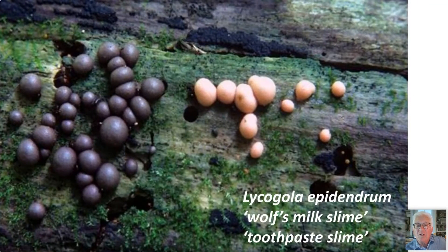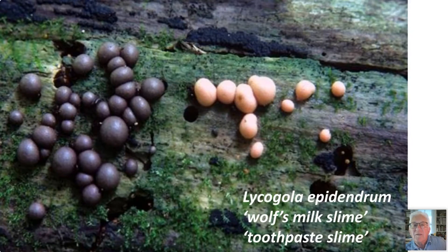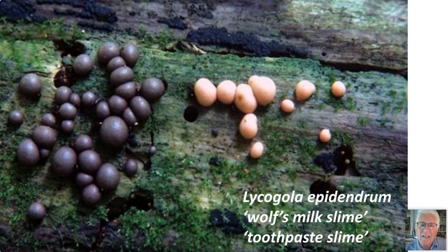Here's another slime mold, Lycogala epidendrum — wolf's milk, sometimes called toothpaste slime. These are little bun-shaped structures, and as the spores mature inside them, you crush this one and it looks like pepto and toothpaste; crush this other one and you get powdery black spores. There are about 450 to 500 slime mold species. People collect them and keep them in matchboxes to play with in the wintertime.